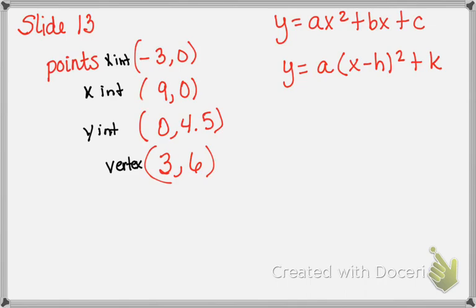This next one gives you a lot more information, so it makes it a little bit easier without having to do that three-equation system. We're going to start in vertex form. We don't know a, but we know some points — a lot of x and y values — and we do know the vertex. Those two points on the x-axis are split evenly from the vertex, so we know that's our vertex.